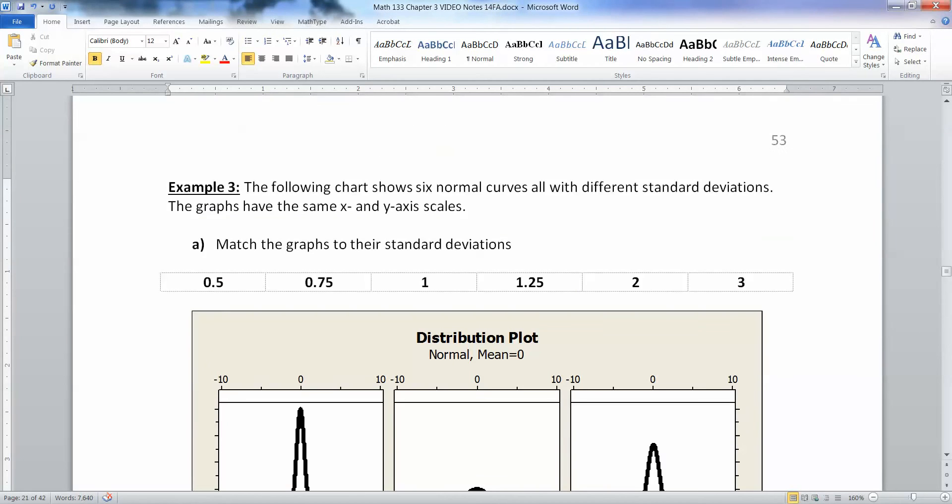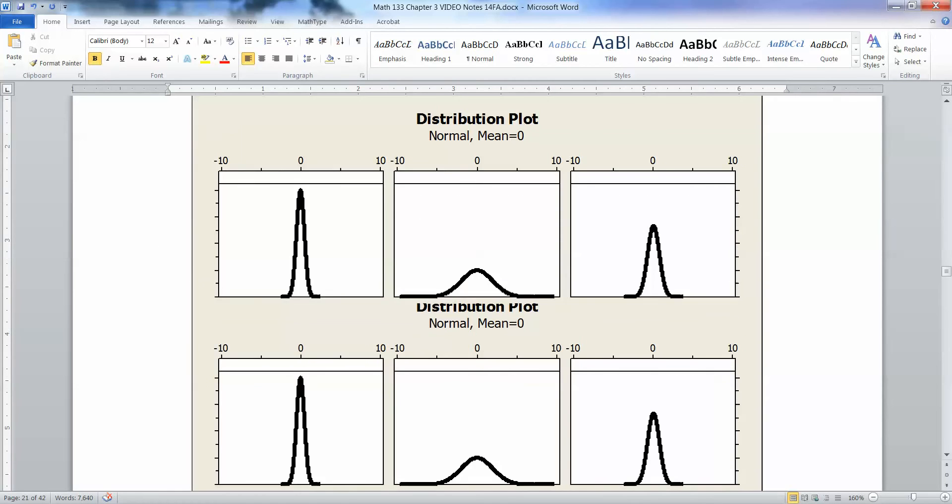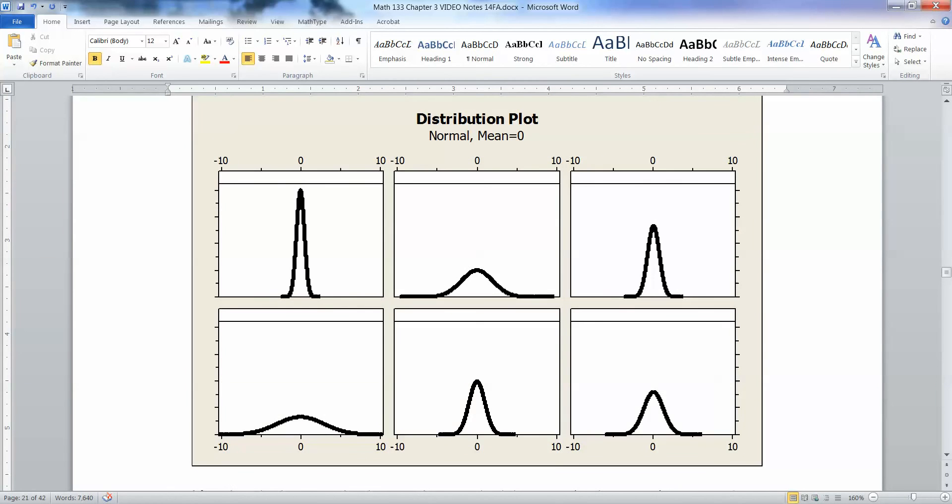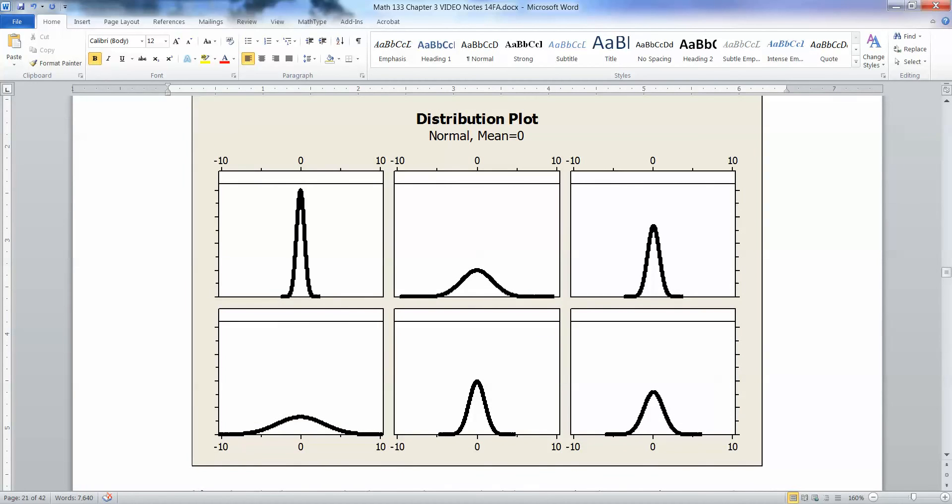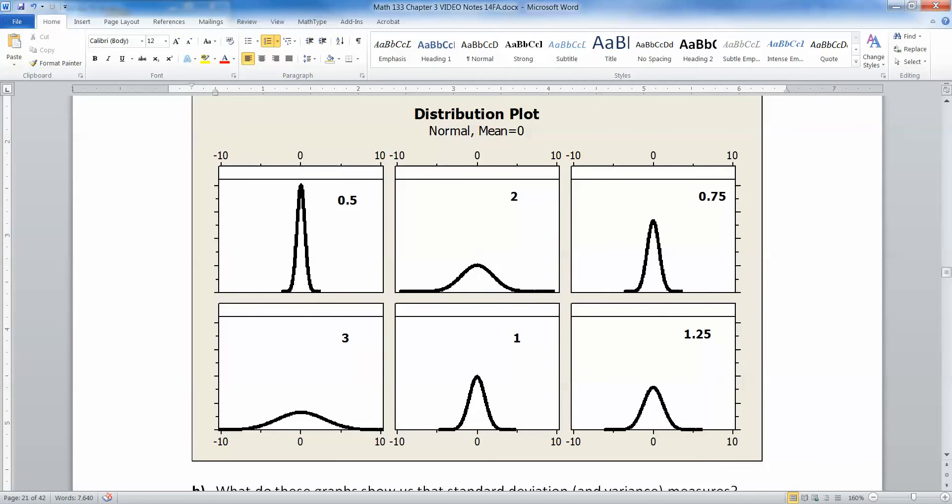So if this one up here is the least, so that would be 0.5. And this one down here is the most, that's 3. So then we need to figure out the rest of these. So this one's the second most, so that would be 2. And then the one that's the second most packed in is 0.75. That's this one over here, 0.75. That leaves us the 1 and the 1.25. So you'll notice that this one here is a little bit more tightly packed than this one. It's a little bit higher at the peak, a little bit more tightly centered. This one's a little bit more spread out. So therefore, this one has to be the 1, and this one has to be the 1.25. So there are all the numbers. I got them all fit in there.